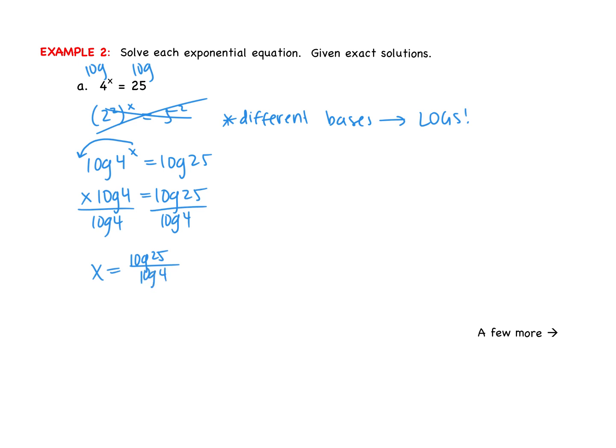Bring it out in front. Power can be brought out in front. So we get x log of 4 is equal to log of 25. So now I can divide by log of 4. So my x ends up being log of 25 divided by log of 4. Listen up. You cannot cancel out the logs. So what some people want to do is they want to cross out the logs and say my answer is 25 over 4. No, that's not true. This is your final answer.